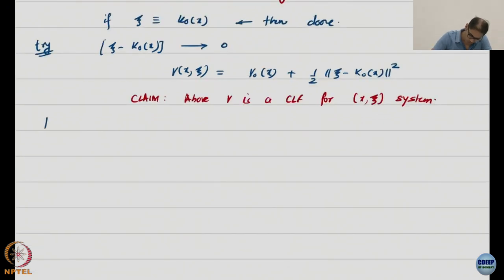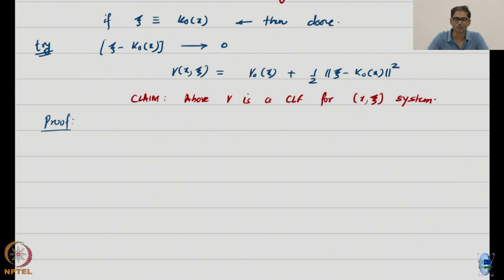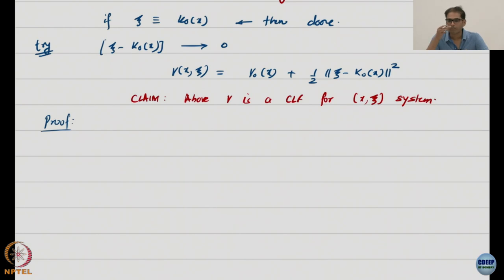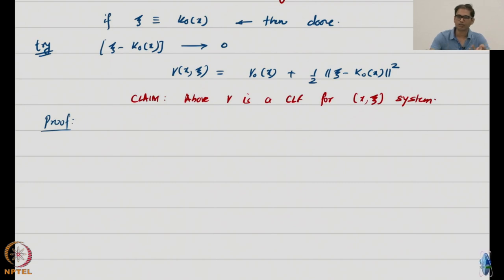So, I want to prove this claim. How do I prove it? Basically, just take derivatives. You would normally compute LfV and LgV, but the simpler way is to take the directional derivative — whatever term multiplies the control is LgV, and the other term is LfV, the drift term.